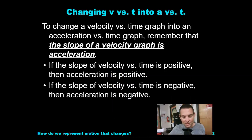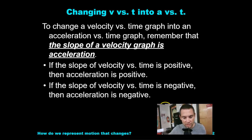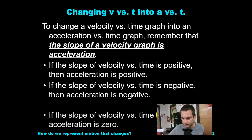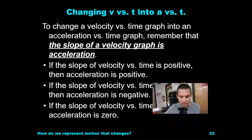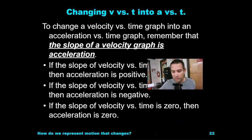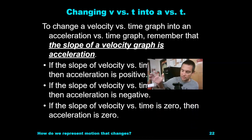If the slope of the velocity versus time graph is negative, acceleration is negative. If the slope of the velocity versus time graph is zero, then the acceleration is also zero.